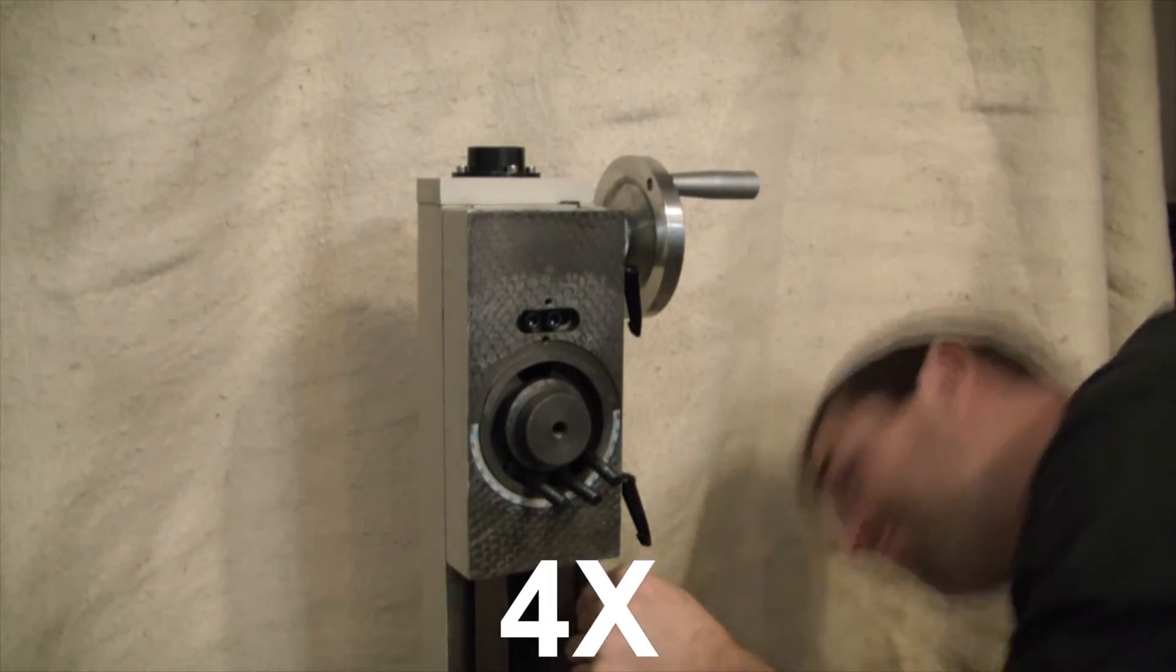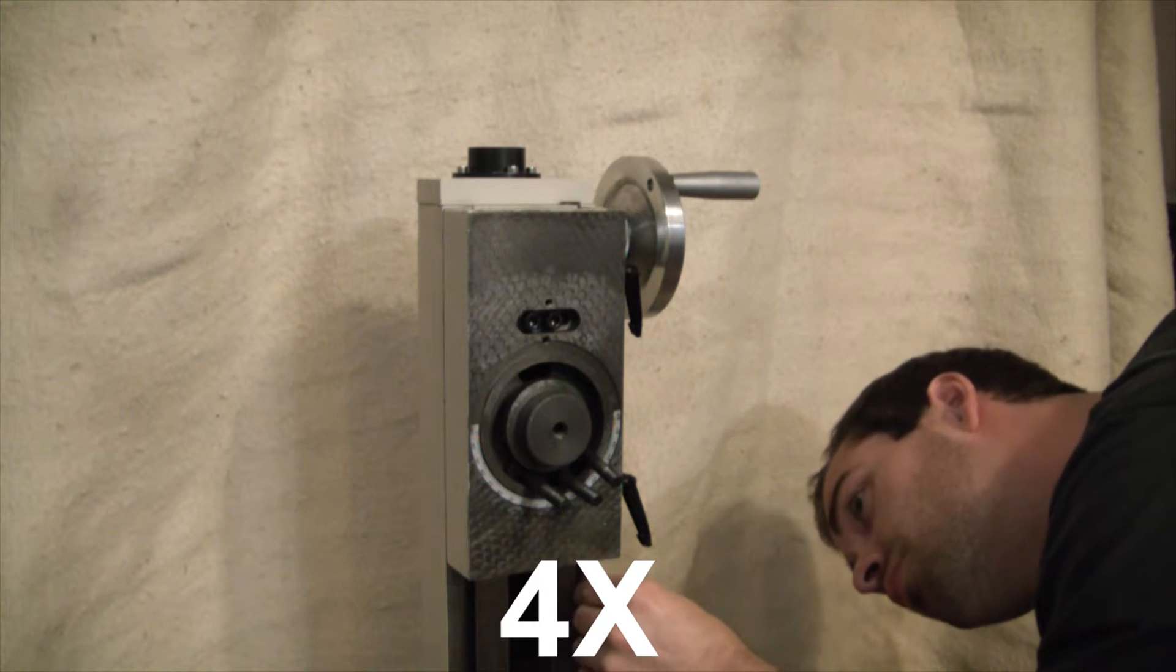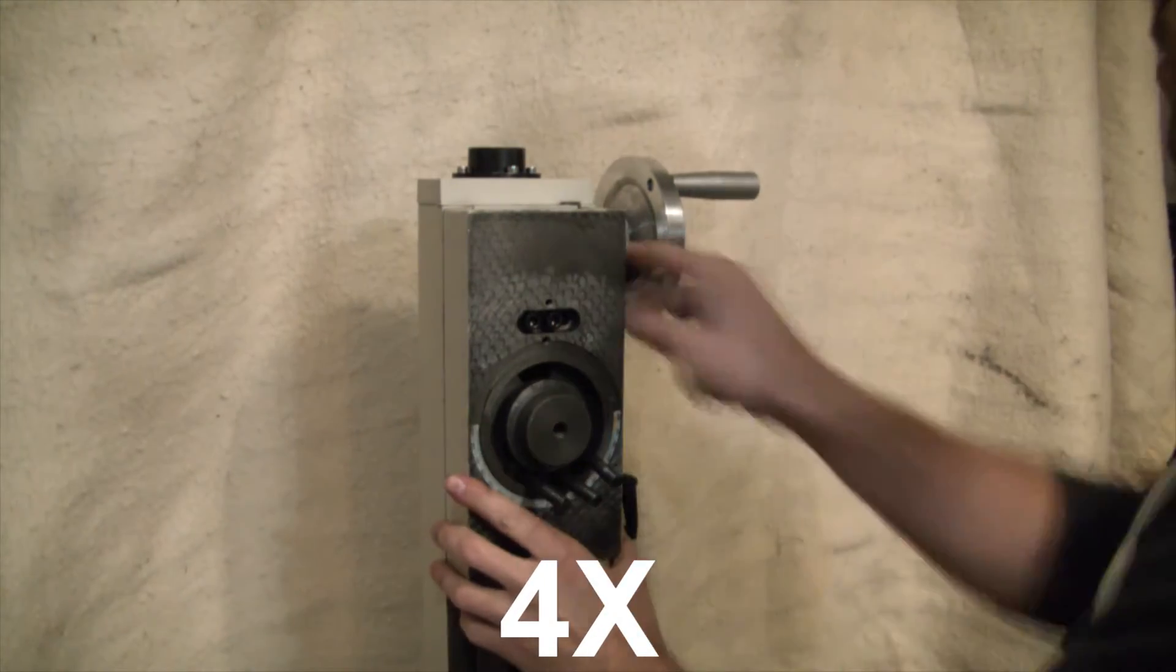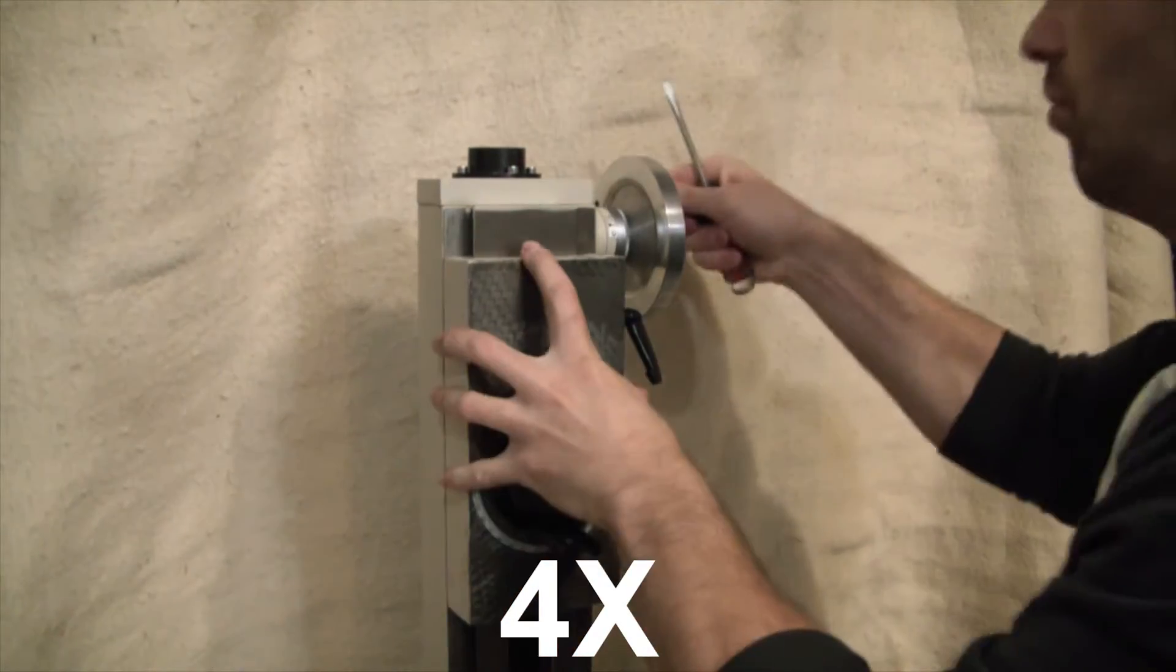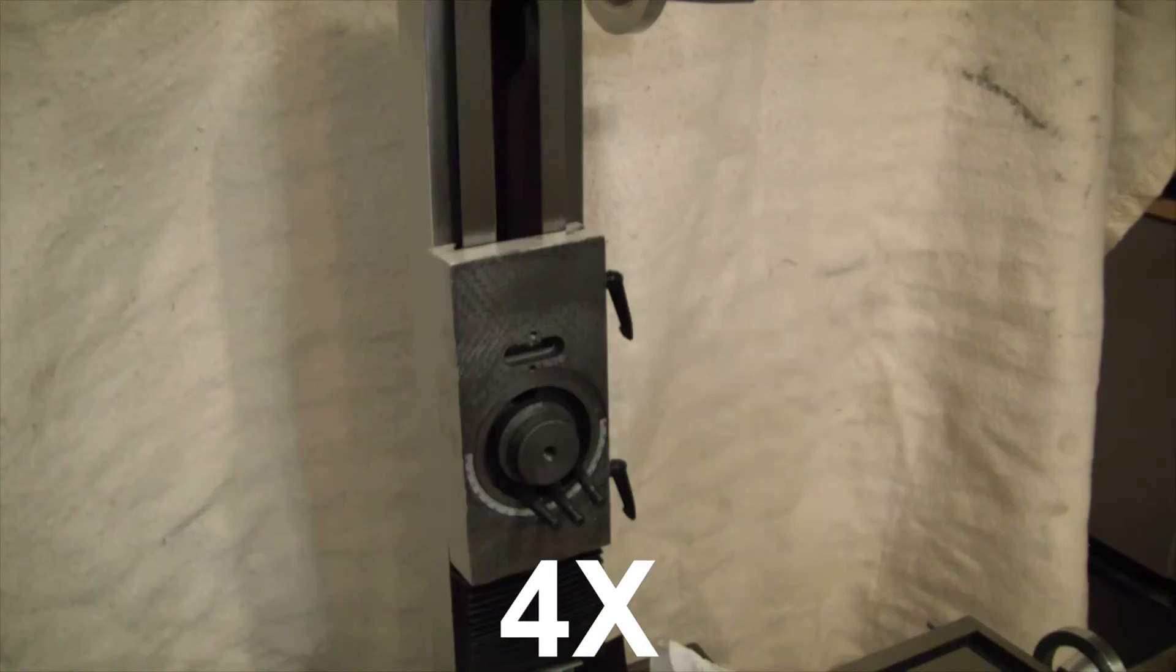Here we are removing the gib screws. Bottom one is a little tricky to get out. It's just tough to get a good angle on that. And there we go, the gib pops right out.